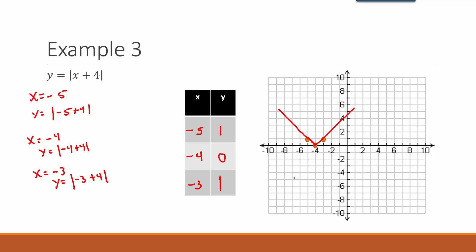To graph using the table method: solve for one of your variables — normally that is y. Then pick at least three values for the other variable — normally x. Plug them in and find the y-coordinate that goes with each x-coordinate. I hope you found this video to be helpful. Thank you.